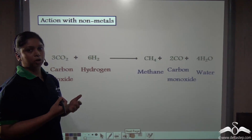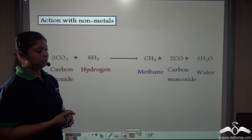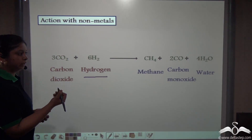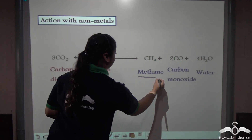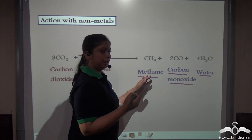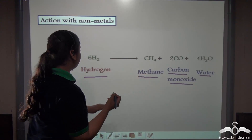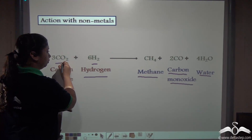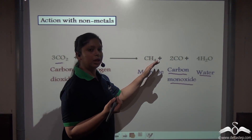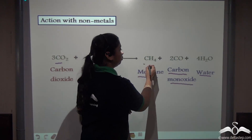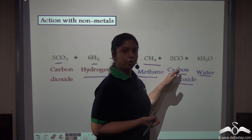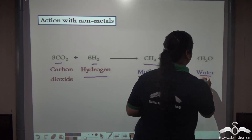What about non-metals? When you treat carbon dioxide with a non-metal like hydrogen, you get methane, carbon monoxide, and water. Methane is a hydrocarbon — that is, it contains hydrogen and carbon. Any compound having a combination of carbon and hydrogen is known as a hydrocarbon, and methane is one such example. Along with that, carbon monoxide and water are formed.